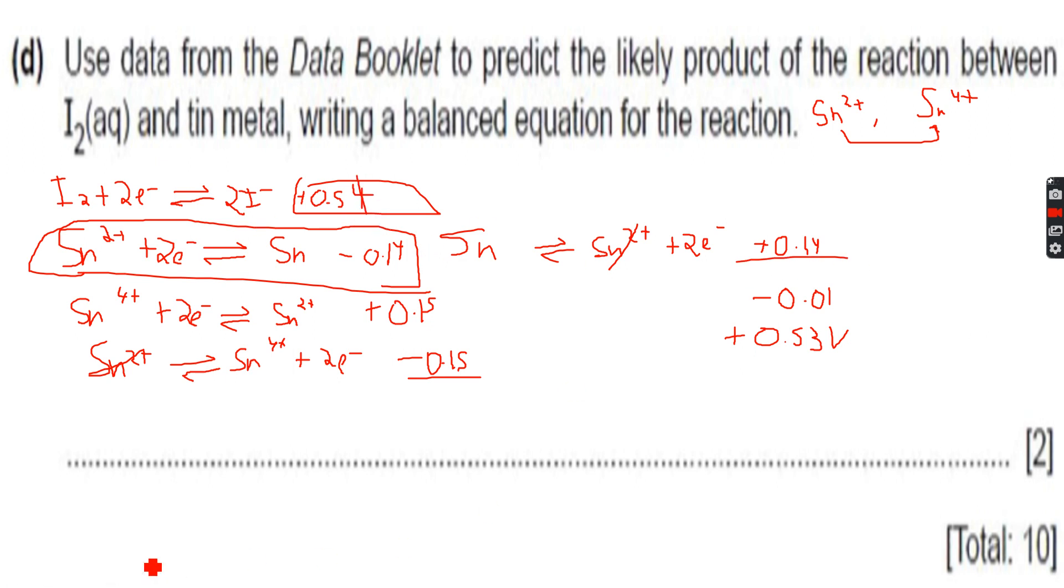The overall reaction: the Sn2+ and Sn2+ will cancel out. So if we have to look at the two tin equations, we'll get Sn gives us Sn4+ plus 4 electrons. Then we have only two electrons, so we'll multiply this entire equation by two to get four electrons.